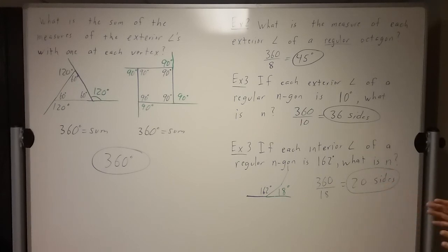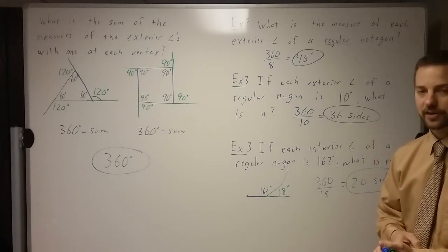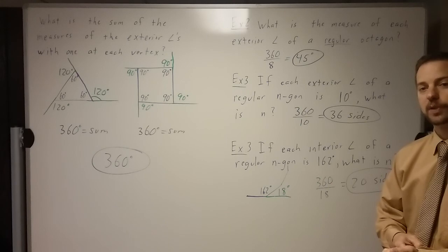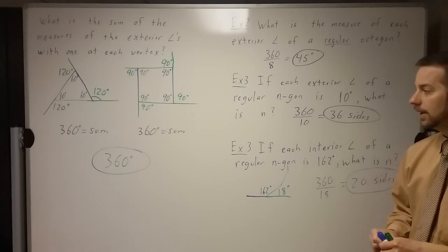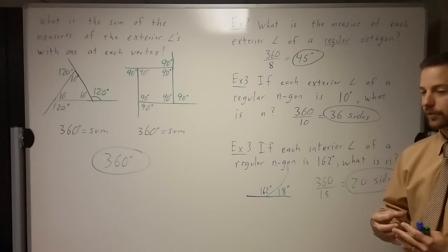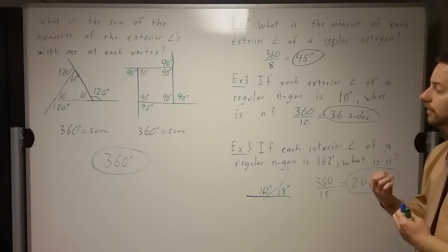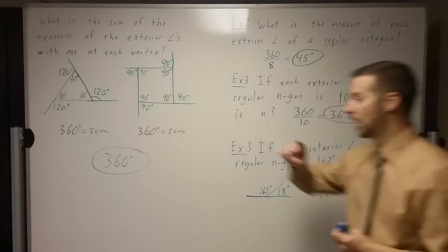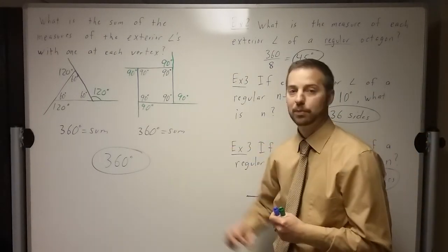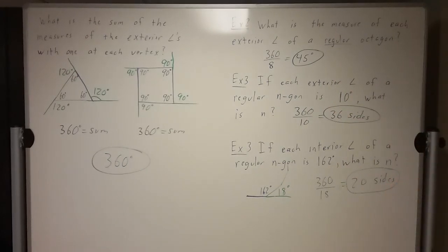So there are the two big rules to remember. For interior angles: the sum of the interior angles of a convex polygon is (n minus 2) times 180 degrees — this changes based on n, the number of sides. For exterior angles: the sum of the exterior angles of a convex polygon is always 360 degrees — it doesn't change based on the number of sides.